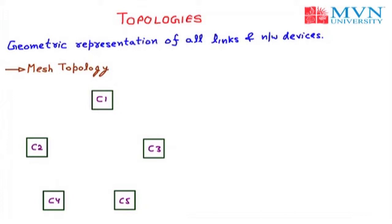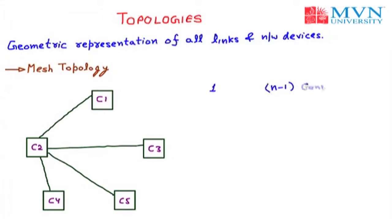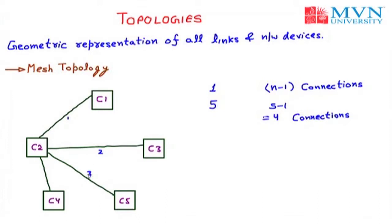Taking computer C2 as an example — it is connected with C1, C3, C5, and C4. So a single computer can be connected with N minus 1 connections. Here we have five computers, so it is connected with 5 minus 1, which equals four connections. From C2 to C1 is 1, C2 to C3 is 2, C2 to C5 is 3, and C2 to C4 is 4.